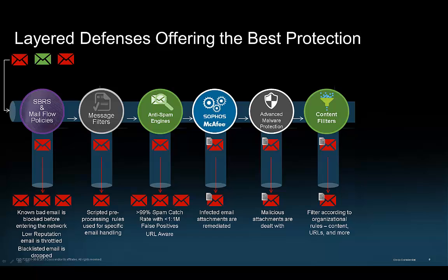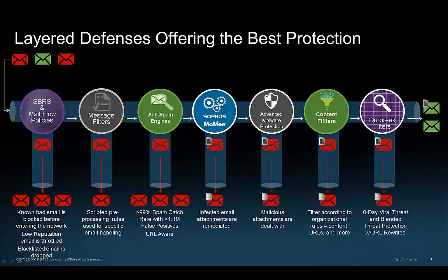Content Filters give you the power to filter emails based on content including URLs and URL reputation. And then Outbreak Filters, which has two functions to protect you. Zero-Day Viral Outbreak Detection uses cloud-based telemetry data and blended threat protection such as detecting phishing messages with web links and emails trying to get you to use a phone to confirm banking information. It rewrites URLs in suspect messages for additional scanning by our Cisco Cloud Web Security-powered proxy at click time to provide additional protection.